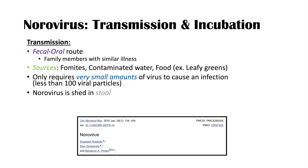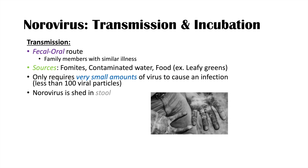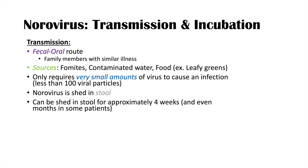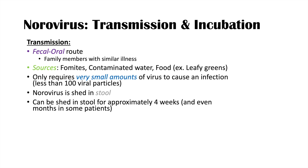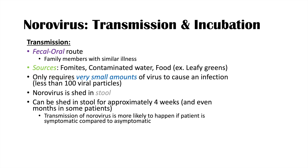The norovirus is shed in the stool of infected individuals — that is how it is transmitted. An individual who hasn't washed their hands properly can touch objects and contaminate them, or the virus can get into water or food. Notably, the norovirus can be shed in the stool for approximately four weeks, and even months in immunocompromised patients. Even after individuals have recovered, they can still shed the virus. Transmission is more likely when a patient is symptomatic, but it can still occur if they're asymptomatic.